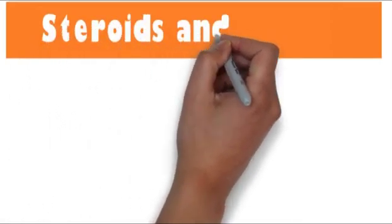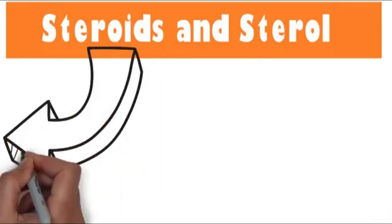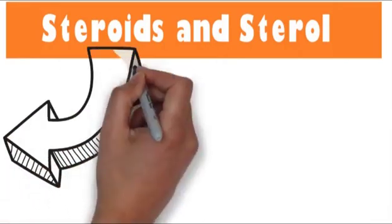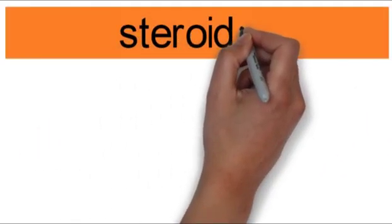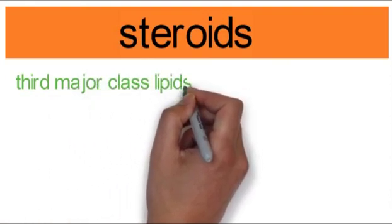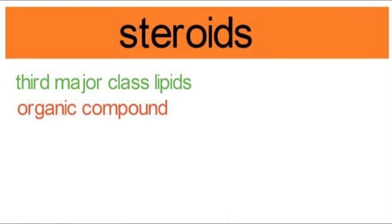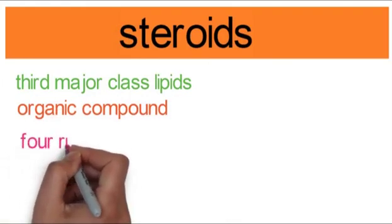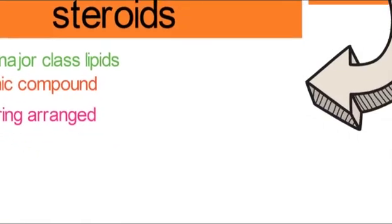Steroids and sterols. Steroids. First of all, we will discuss the steroids. So what is steroids? Steroids is the third major class of lipids. Steroids are organic compounds with four rings arranged in specific molecular configuration.